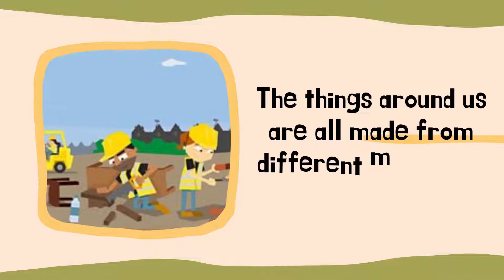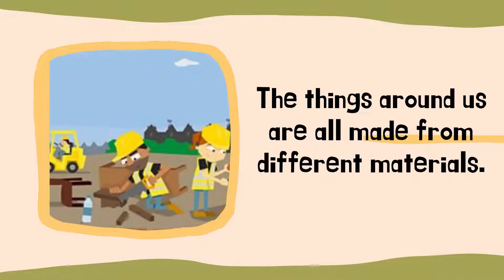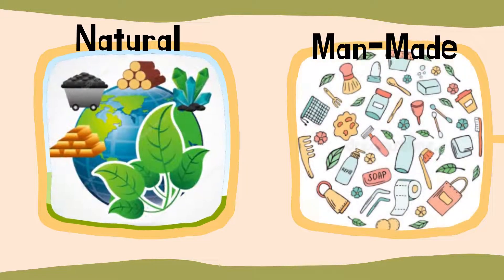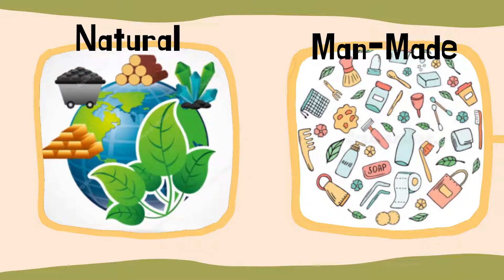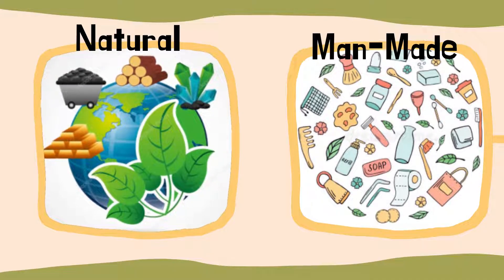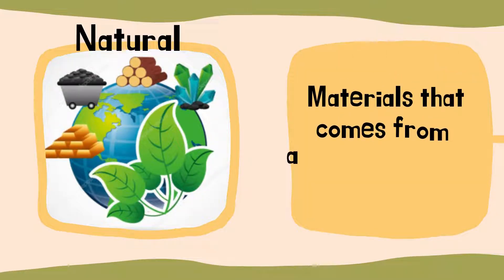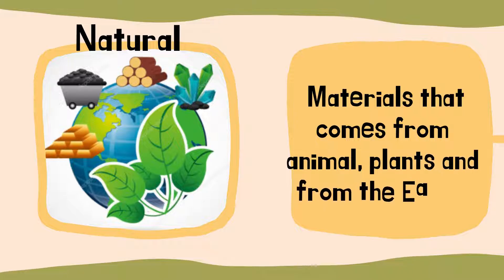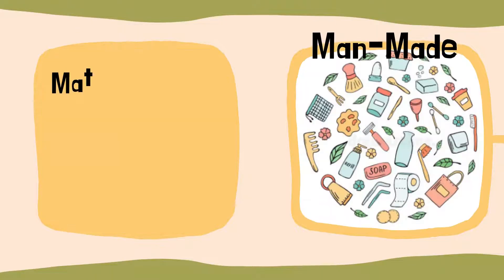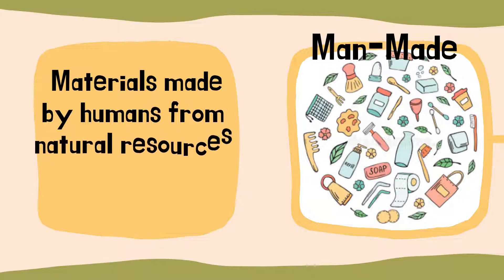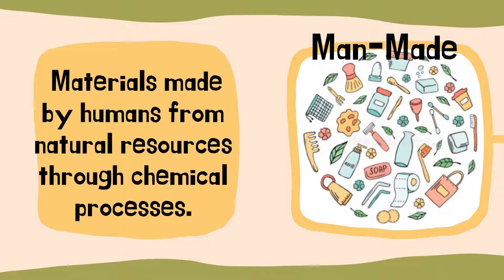All the things around us are made from different materials. Some of these materials are natural and the others are man-made. Natural materials are materials that come from animals, plants, and from the earth. Man-made materials are materials made by humans from natural resources through chemical processes.